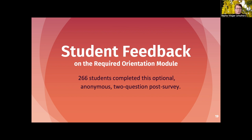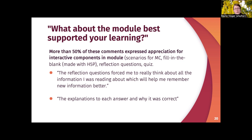Between last year and this year, 266 students completed an optional Qualtrics form to provide feedback on their learning experience with the module, where they were asked both what benefited their learning and what detracted or was missing. More than 50% of student comments expressed appreciation for the interactive components — such as the scenarios with multiple-choice and fill-in-the-blank activities created with H5P, reflective questions, and being able to hear from peers in the student responses. A significant proportion also appreciated being much clearer about the complexities of academic integrity, such as when it's appropriate to work with peers, with many mentioning the real-life scenarios as helpful. Many students mentioned the benefit of resources they could turn to when stressed, and several appreciated that the module acknowledged historical power issues around citation.